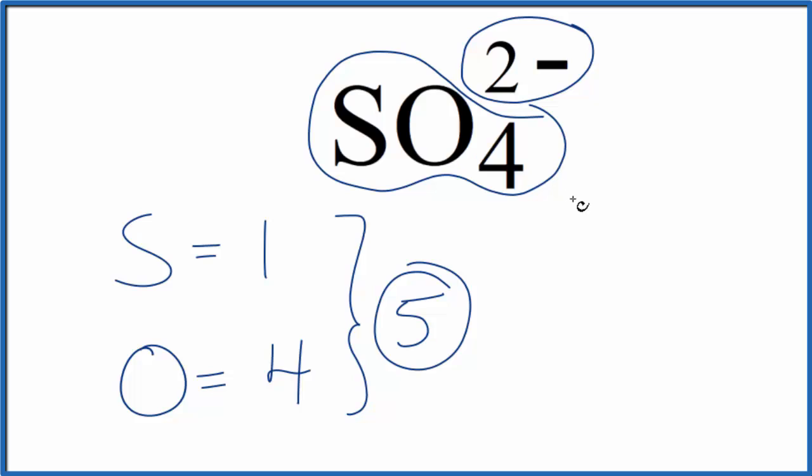This is Dr. B looking at the number of atoms in SO4²⁻, the sulfate ion. We have one sulfur, four oxygens for a total of five atoms. Thanks for watching.